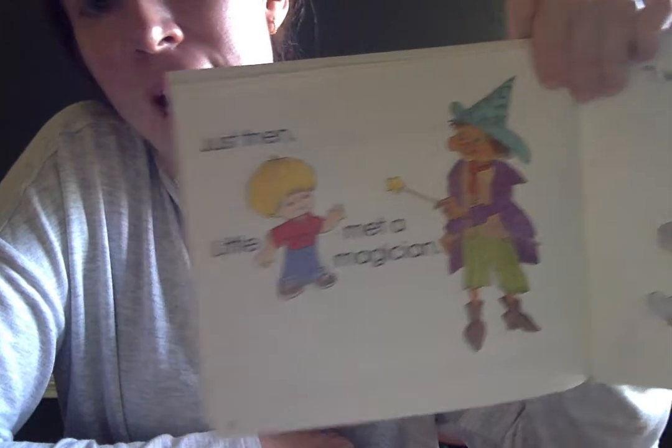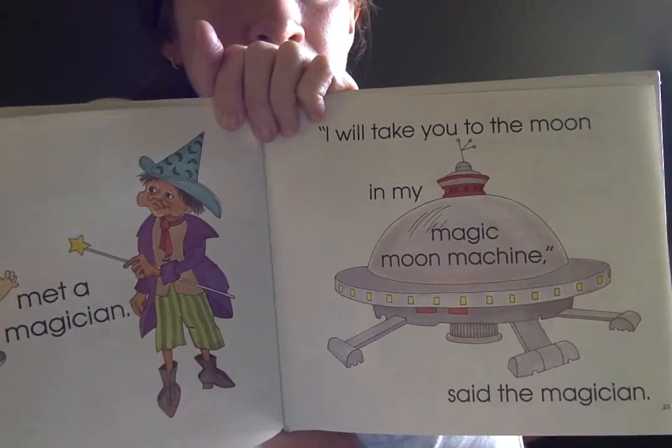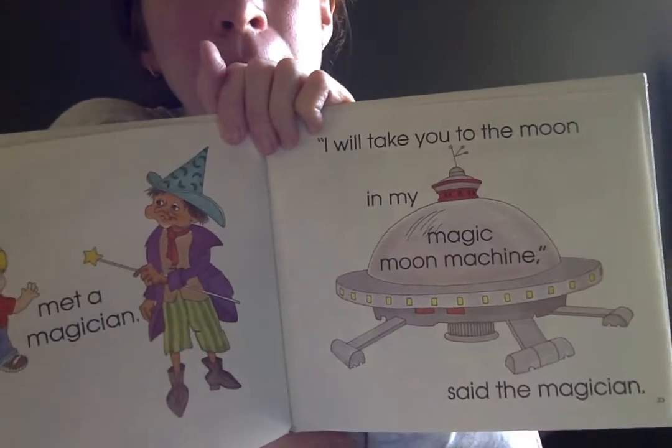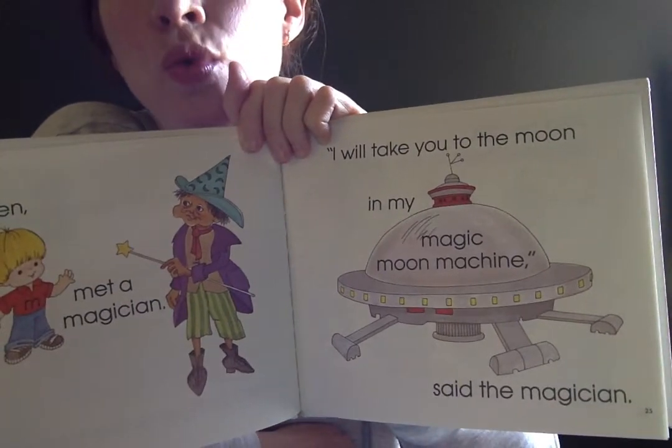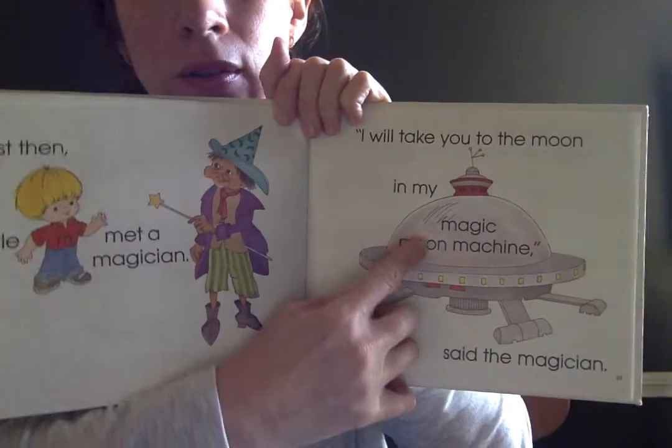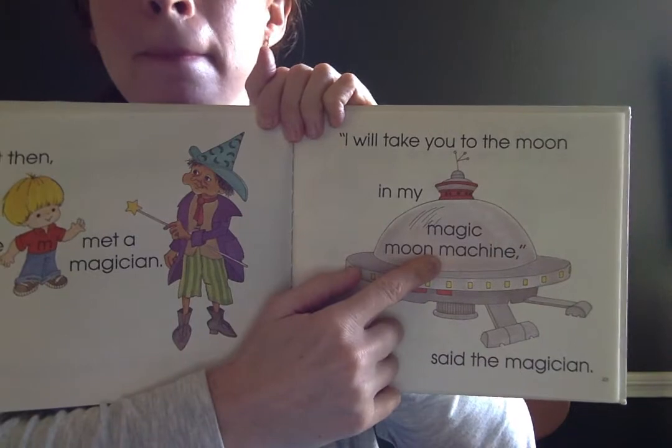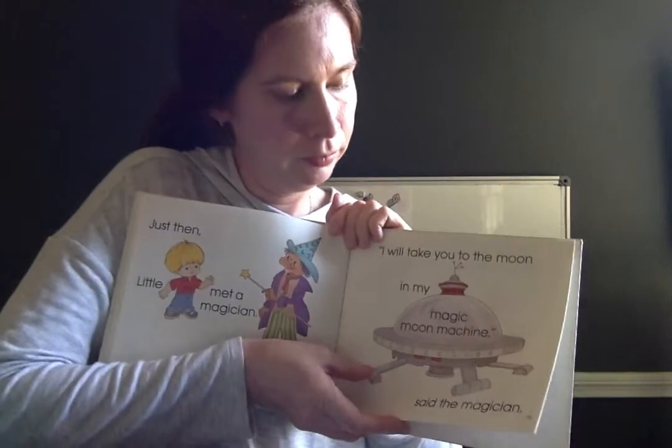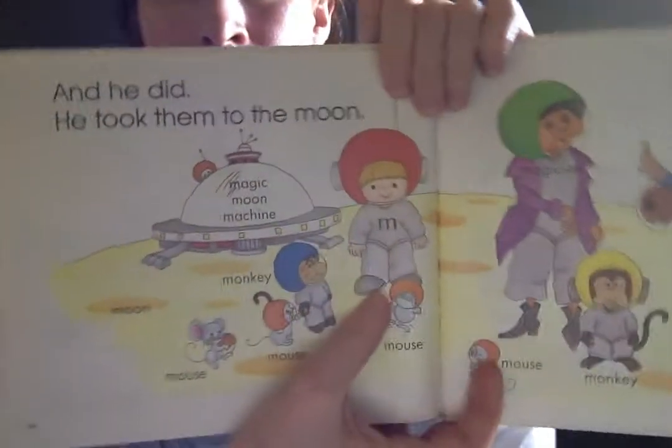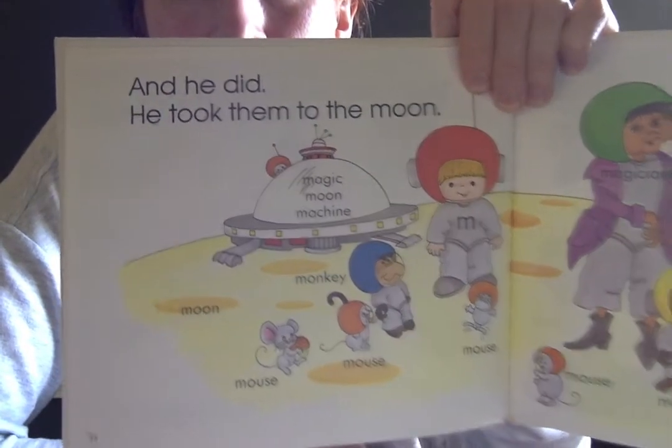Just then, Little M met a magician. I will take you to the moon in my magic moon machine, said the magician. Do you hear all those words? Magic moon machine. Magic moon machine. And he did. He took them to the moon.